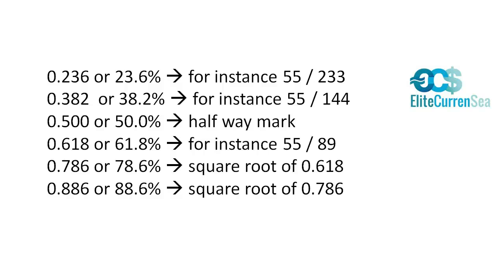The standard Fib numbers are 38.2, 50, and 61.8 — these are always found when a trader uses Fibonacci. I have added two higher levels and one lower one, the 23.6, to gain more feeling for certain price movements, bounces, or breaks. The 50 is not actually a Fib number — it is just a halfway mark, but it is still commonly used.